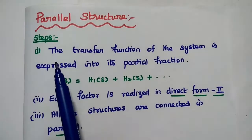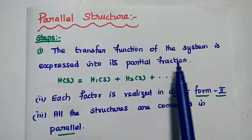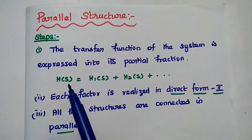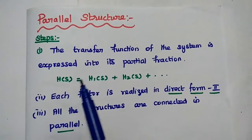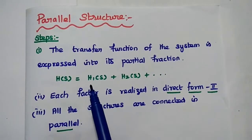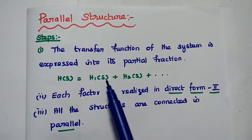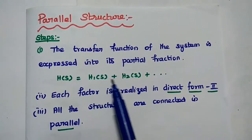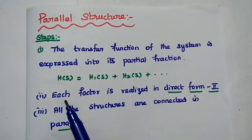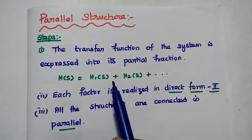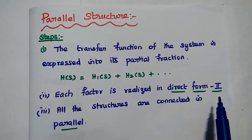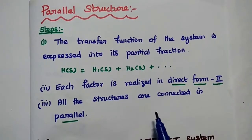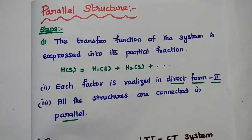The first step is that the transfer function of the system is expressed as its partial fraction. Here H of S represents the overall transfer function of the system, expressed in terms of partial fractions. Each partial fraction is then considered as a separate transfer function. We realize each transfer function using the direct form 2 method, and finally connect all structures in parallel to get the overall parallel structure.